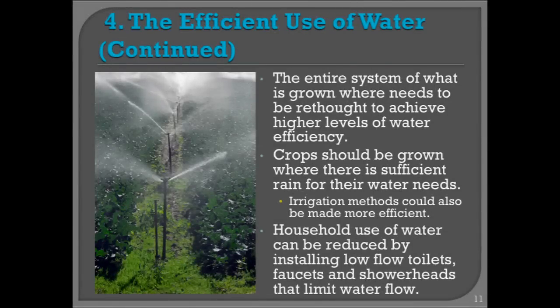The entire system of what's grown where needs to be rethought with the idea of water efficiency in mind. Crops could be grown where there's sufficient rain for their water needs. Sometimes in a local economy, some crops need a lot of water and will be grown because irrigation is available, but growers would be better off growing something else based on local conditions. But if the water comes cheap through a government-subsidized irrigation system, there's no incentive to match the plant to the local ecosystem, particularly when some plants and foods are subsidized and some are not.